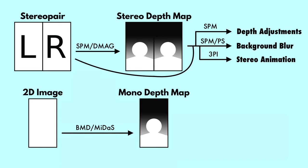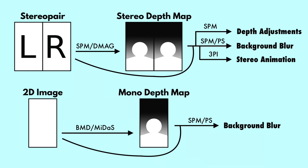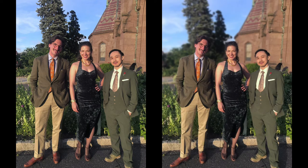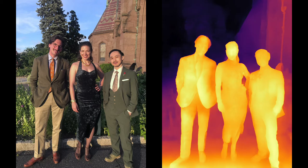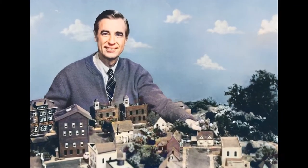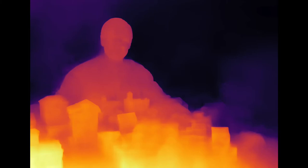Once we have this depth map, we can do many of the same things as on the stereo pair track. We can't really do the depth adjustment because there's no depth to adjust as this is still a 2D image, but we can use Stereo Photo Maker or Photoshop to apply a background blur. For instance, we can take this photo and change it to this. The primary reason modern camera phones have depth-sensing technology is to do precisely this — to simulate a shallow depth of field for portrait photos. Here is the depth map from BMD and MIDAS that I used for this effect. We can also use the 3D Photo Inpainting AI to create an animation, albeit a mono animation. This animation I showed earlier was produced this way, and here's the depth map behind it.